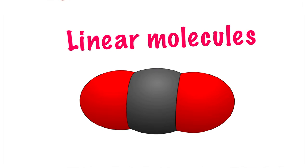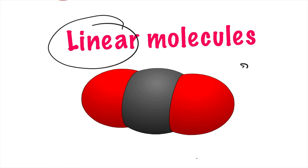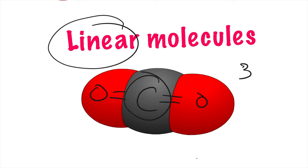Let's look at examples of different molecular shapes in the syllabus. Carbon dioxide is a good example of a linear molecule. In every linear molecule, you have a total of three atoms — a central atom and two atoms around it — where the central atom has no unshared electrons. Carbon dioxide is a very good example, but we do have another example.